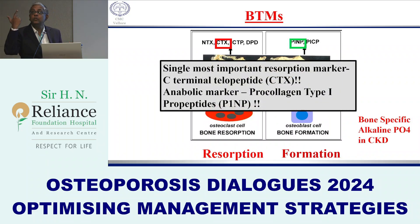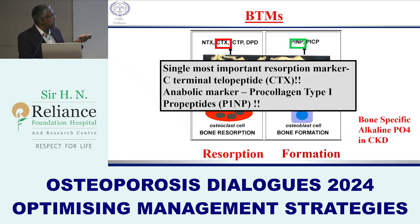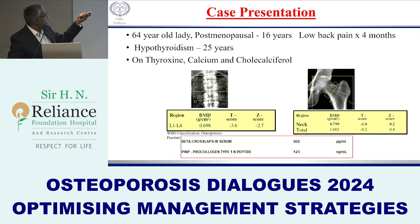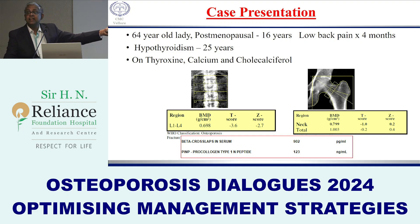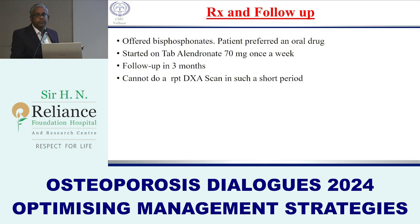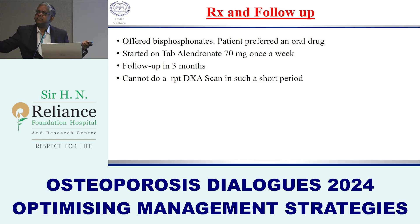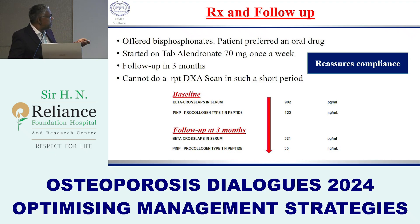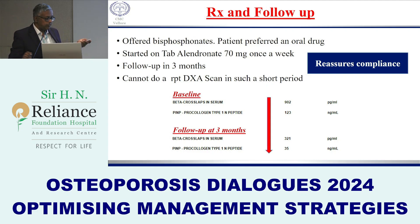In clinical practice, bone turnover markers are used for monitoring: CTX (beta-CrossLaps) for bone resorption and P1NP for bone formation. In kidney disease, bone-specific alkaline phosphatase (BSAP) is preferred. These markers are not for diagnosis but for monitoring. Example: a 64-year-old woman with osteoporosis had a baseline CTX of 902. After starting oral bisphosphonate (alendronate), CTX dropped to 321 at three months, confirming both drug efficacy and good patient compliance. DEXA cannot be repeated every three months, making these markers very valuable.